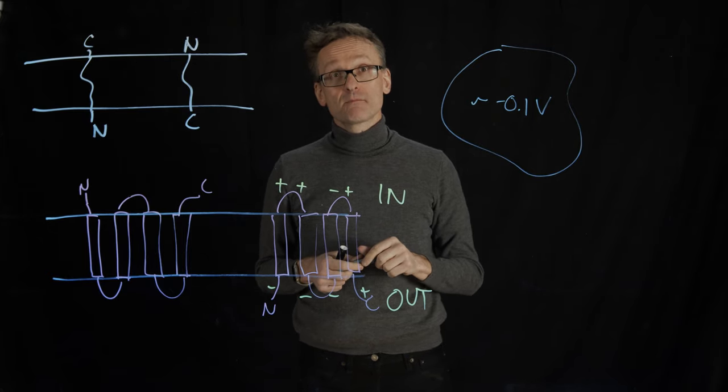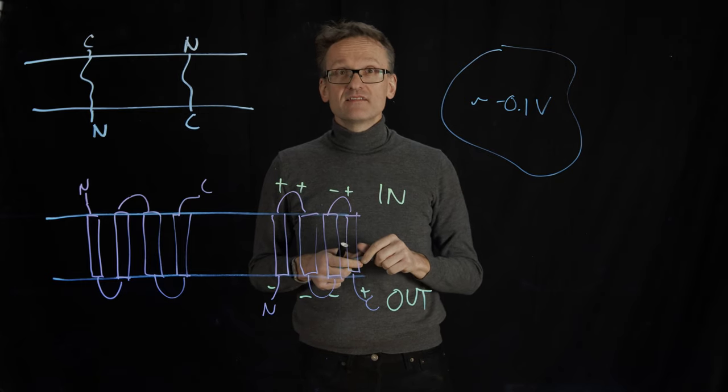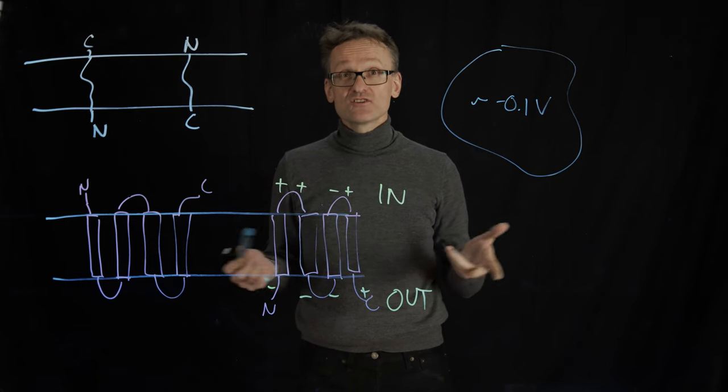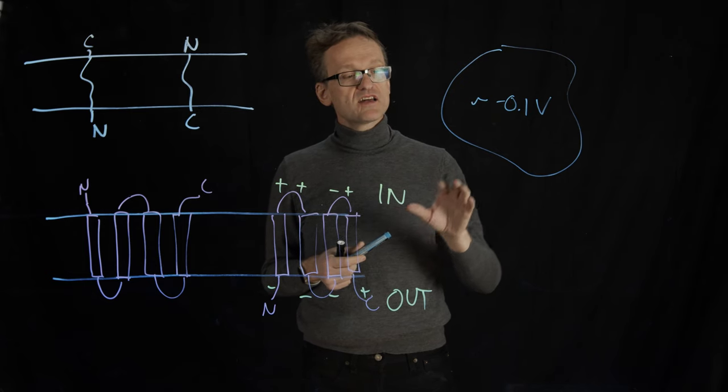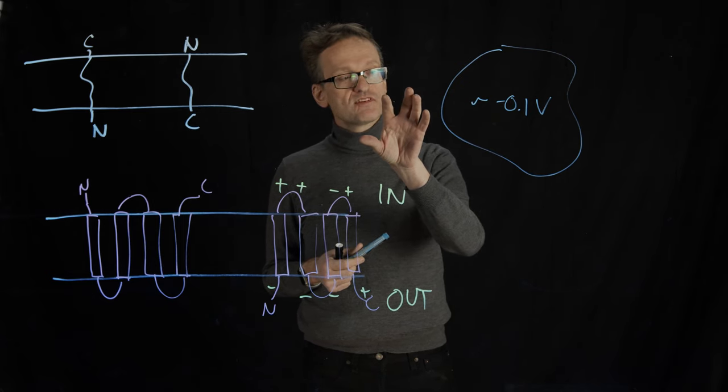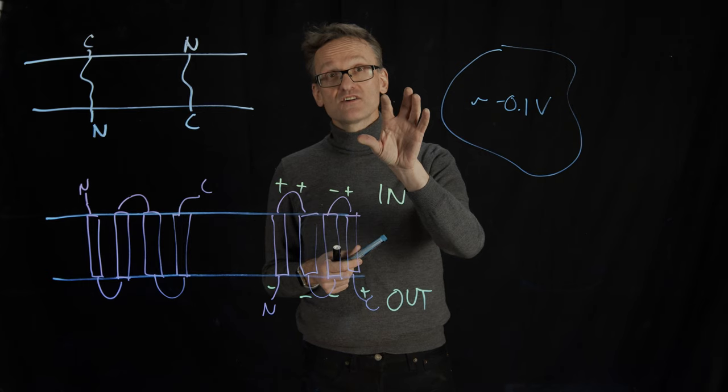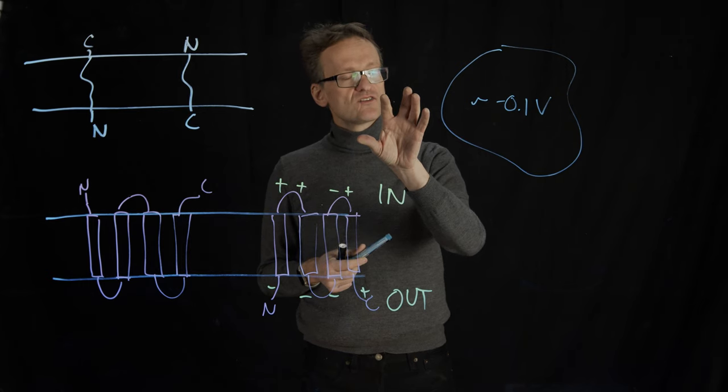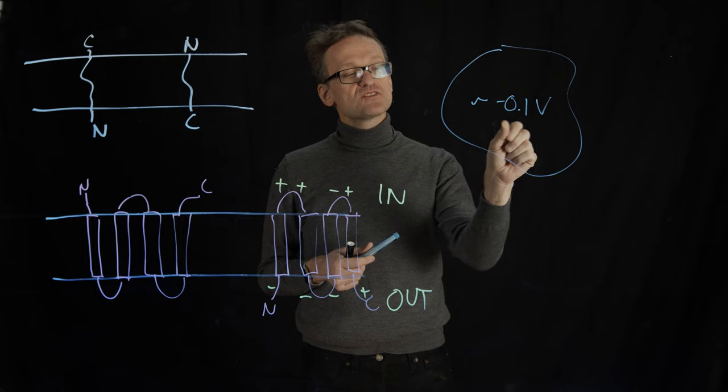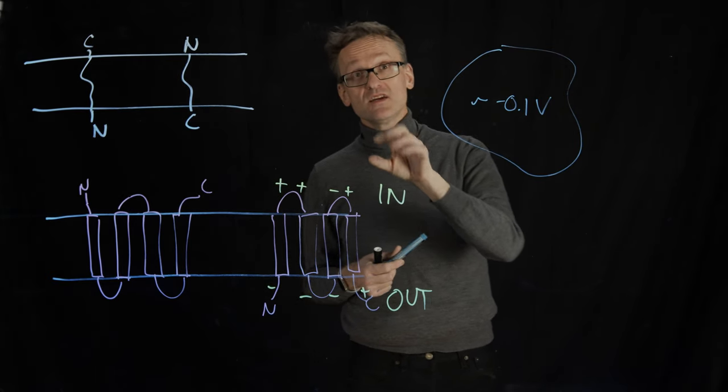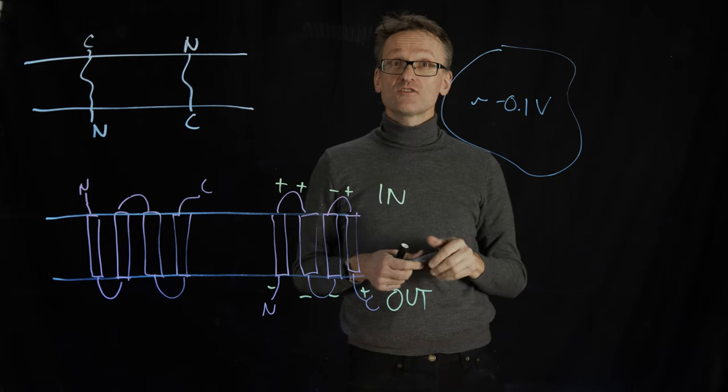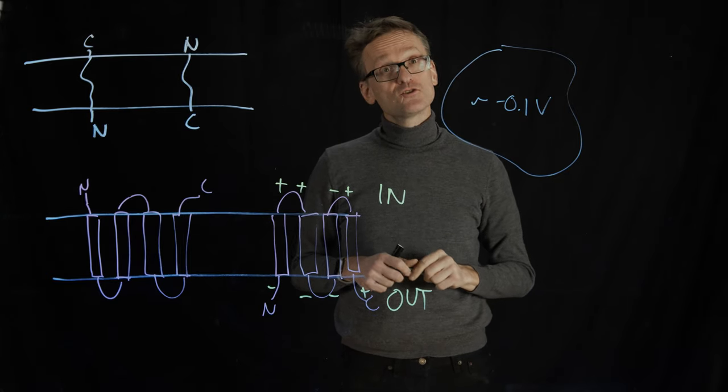Where does this potential come from? That has to come from ions. Ions are really the only charged particles. So this means that we must have an excess of negatively charged ions on the inside, or an excess of positively charged ions on the outside, meaning fewer positively charged on the inside. And it turns out to be the latter.